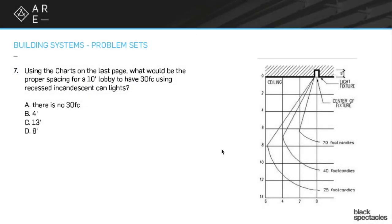Let's look at the next example, which is a can light. We're looking for the proper spacing in a 10-foot lobby to achieve 30 foot-candles using recessed incandescent can lights. We'll be using the charts on the last page that was sent out.